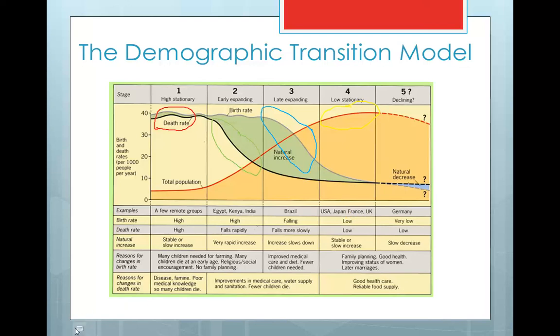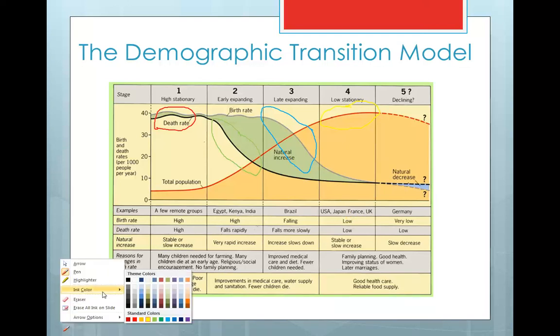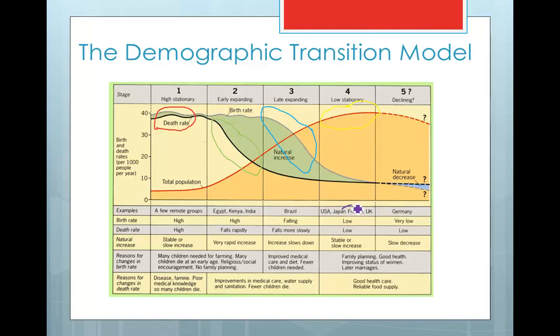Japan is slightly different now since this diagram was created. If we actually take Japan as an example, what we can consider is that Japan is a country which is beginning to enter into stage five and it's got a declining population. Germany is another example of this. This is because its death rate is remaining fairly steady but its birth rate is going down.